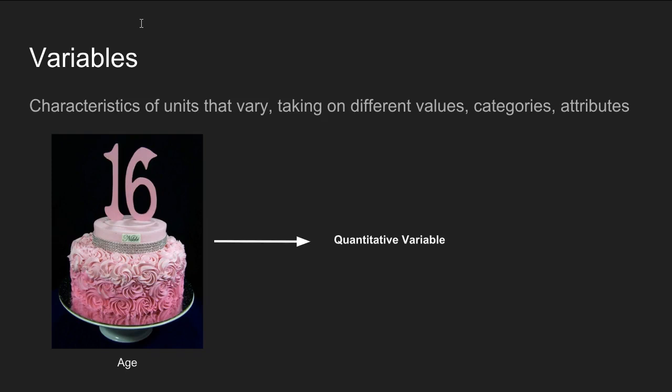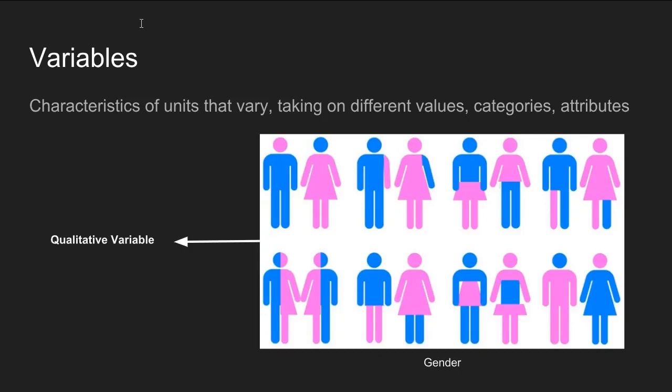When you're assessing relationships among variables, you have to take into account the broad classification of that variable. Age takes on numerical values — age is called a quantitative variable because its values are numerical. In contrast, gender is a qualitative variable because its attributes can be grouped into specific categories but cannot be assigned numerical values.